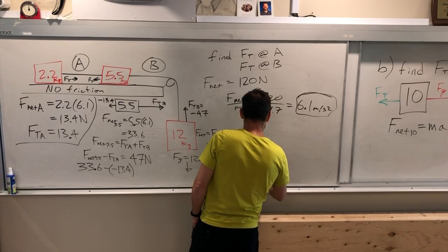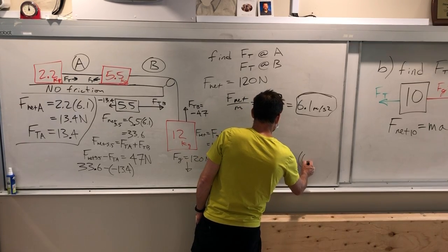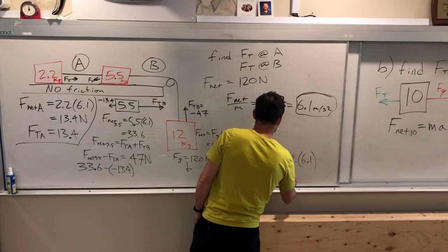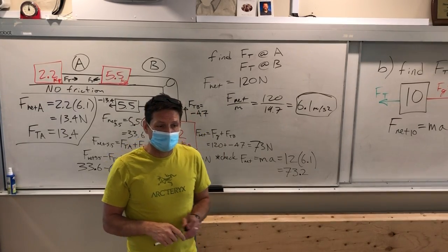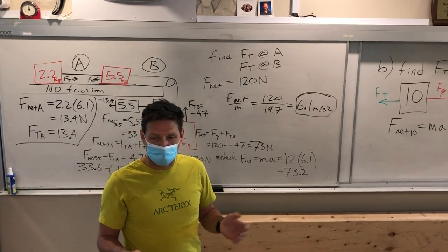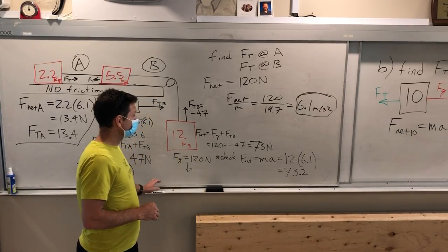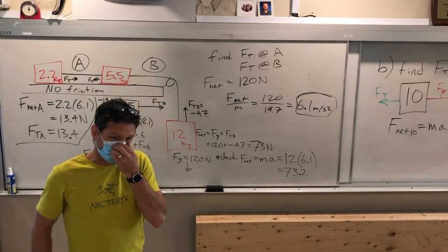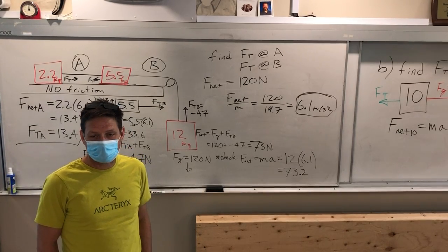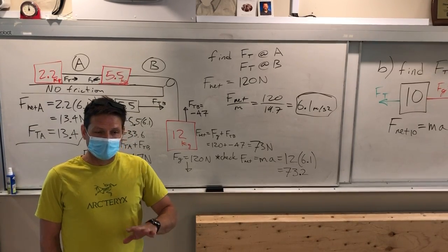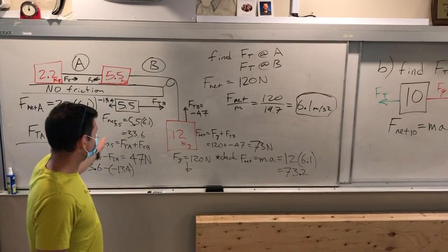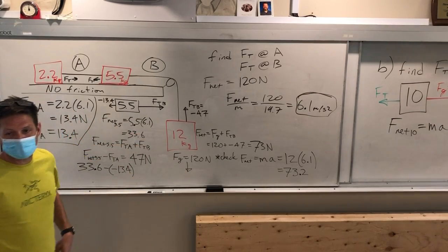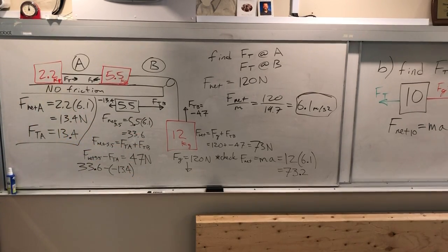Equals mass times acceleration, which is 12 kilos times 6.1, which is 73.2. Now, it might be a little bit off because of rounding error here and there, but that's fine. If you're that close, you're really good. That's as hard a problem as I would give you unless it's like a bonus mark or something. But I can promise you it will be a different situation. So don't try to memorize a formula. Go through this and try to understand it. Okay, I'll post all these.